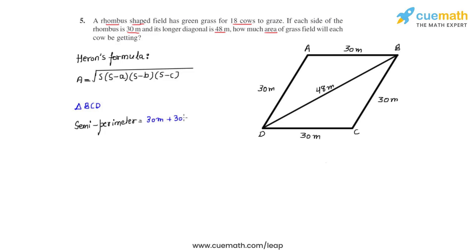Let's start adding: 30 meters plus 30 meters plus 48 meters, and divide that by two. We get the semi-perimeter s of triangle BCD to be equal to 54 meters. Now that we have found the semi-perimeter, let's find the area of triangle BCD by substituting these values into Heron's formula.